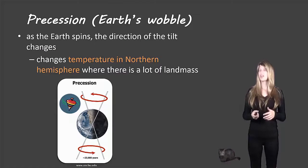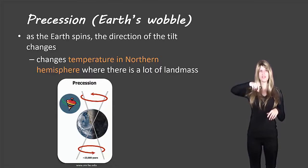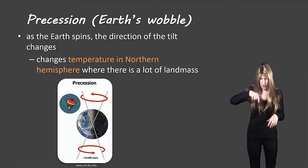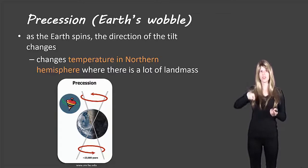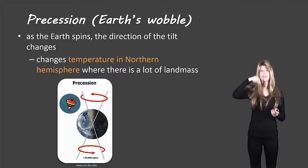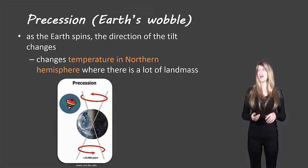And then finally, precession, which has to do with what we call the Earth's wobble. If you imagine a top — if you spin a top and look down from above, you'll notice that as it slows down it starts to wobble around in a circle. The very top of the top will almost paint a circle if you're looking from above, and the Earth does that as well.